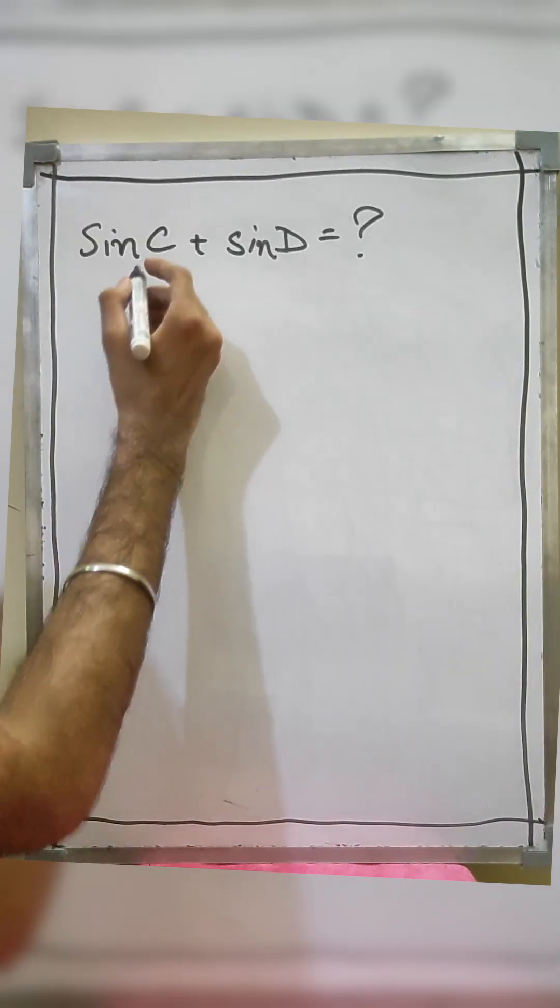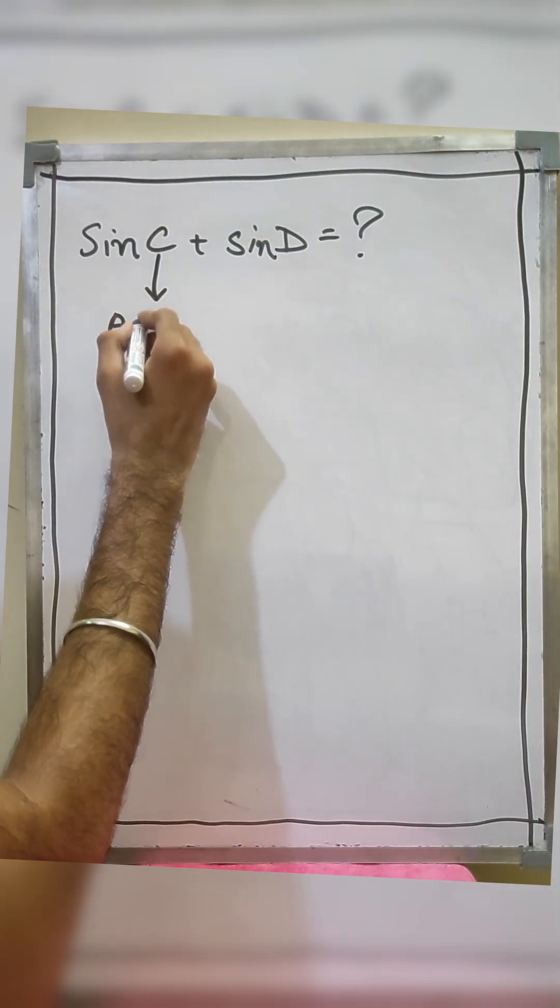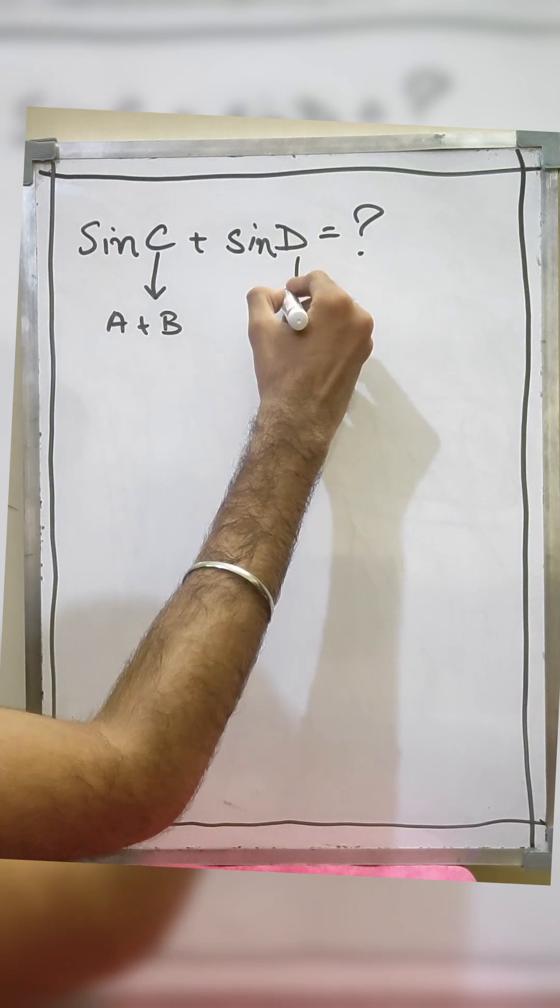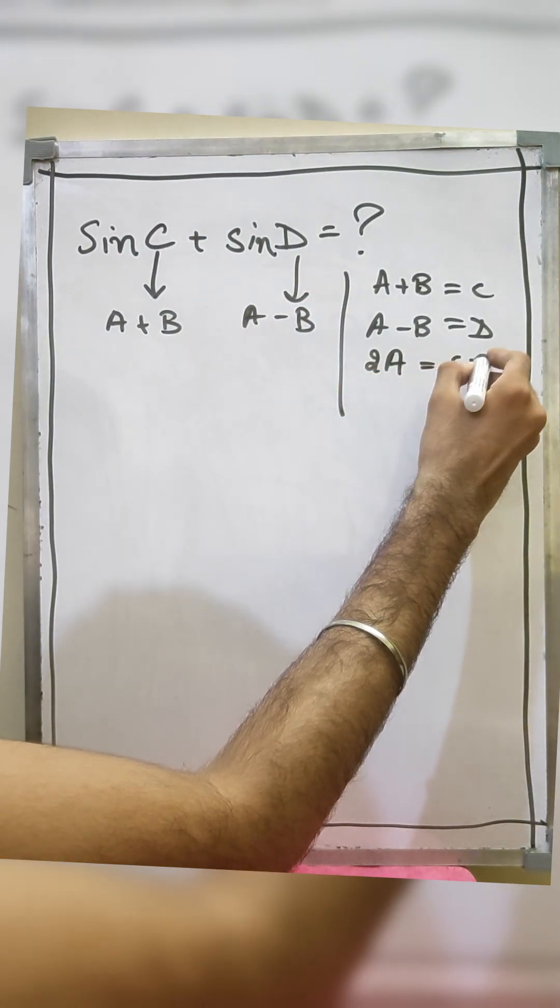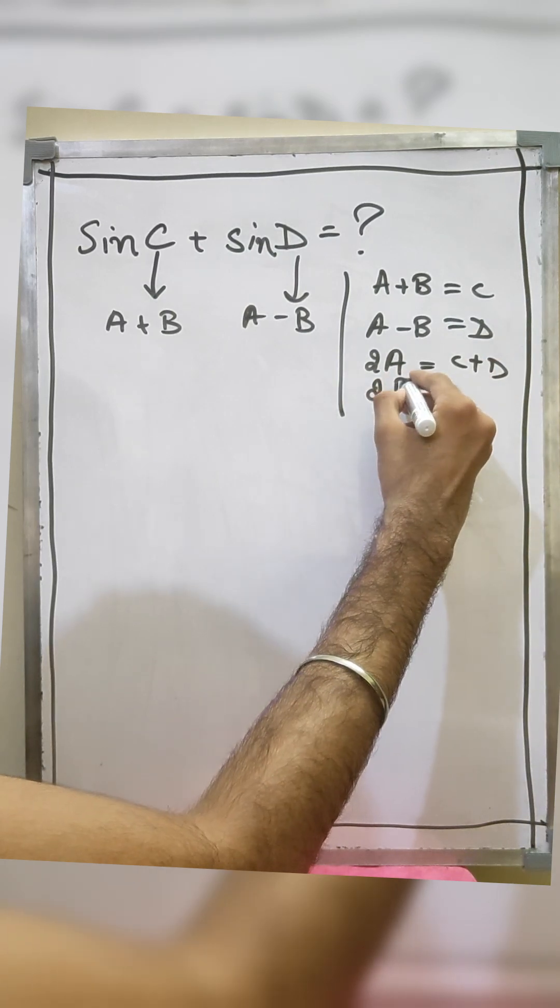Now look carefully. Assume c is equal to sum a plus b and d is equal to a minus b. Then we have twice of a is equal to c plus d and twice of b equals c minus d.